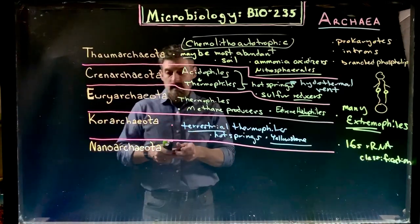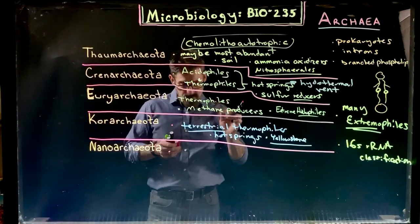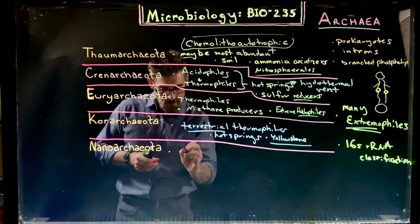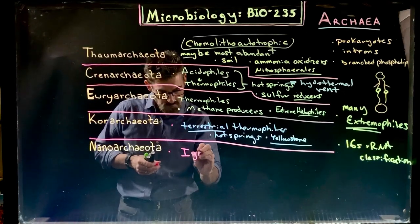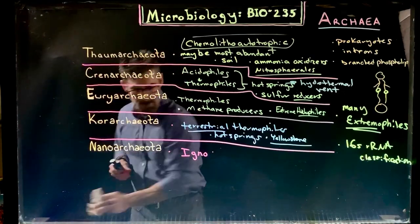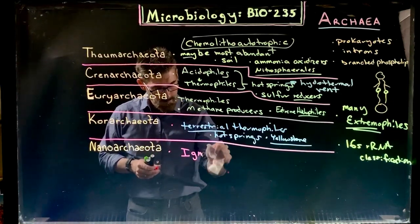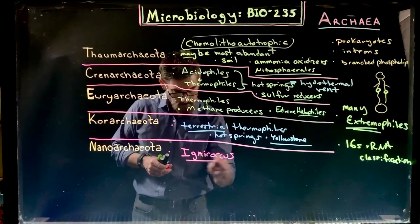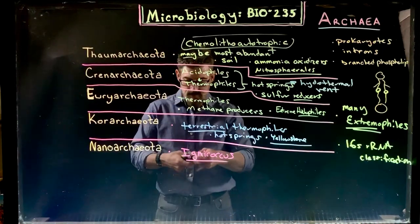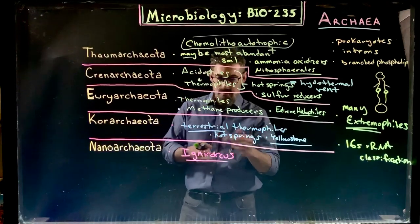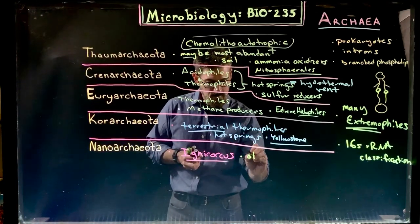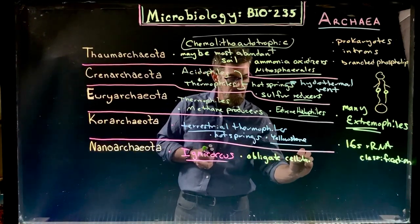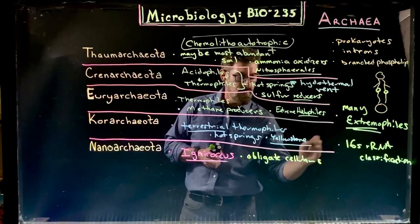The Nanoarchaeota is a small group — in some sources it contained just a single species. The particular genus Ignococcus is an organism that is an obligate cellular symbiote. It lives inside another cell. Thinking back to housekeeping genes — also called constitutive genes — these organisms lack some of those housekeeping genes required for basic life functions. Without them they couldn't survive on their own, so they live inside another cell.